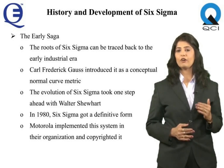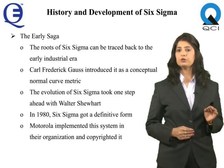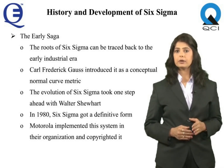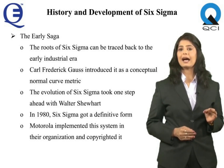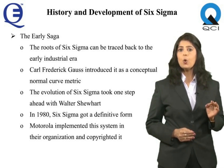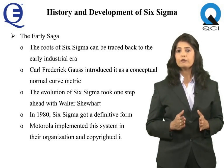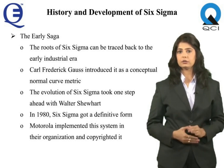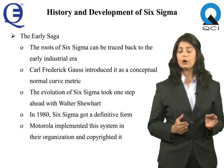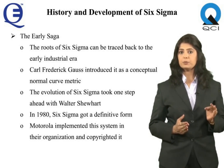History and Development of Six Sigma. The roots of Six Sigma can be traced back to the earlier industrial era. During the 18th century in Europe, Carl Frederick Gauss introduced it as a conceptual normal curve metric. The evolution of Six Sigma took a step ahead with Walter Shewhart showing how three sigma deviations from the mean required a process correction. Later in 1980, Six Sigma got a definitive form when a Motorola engineer coined the term Six Sigma for this quality management process.